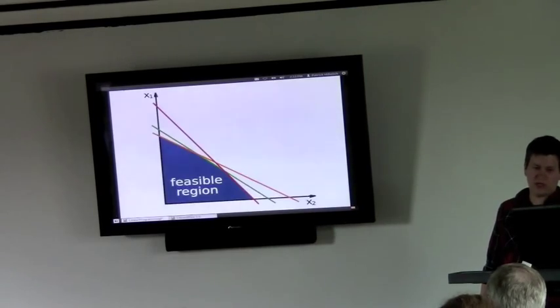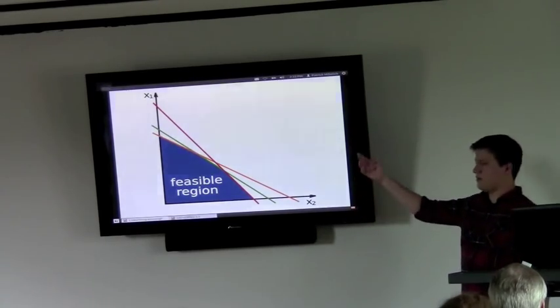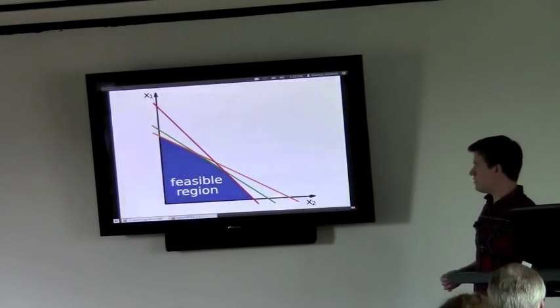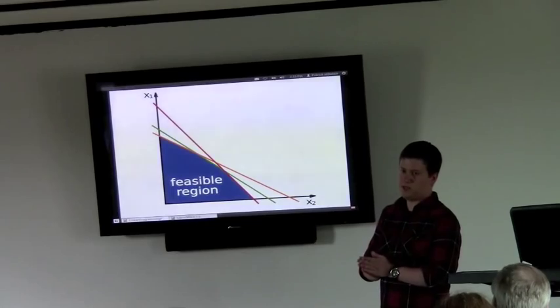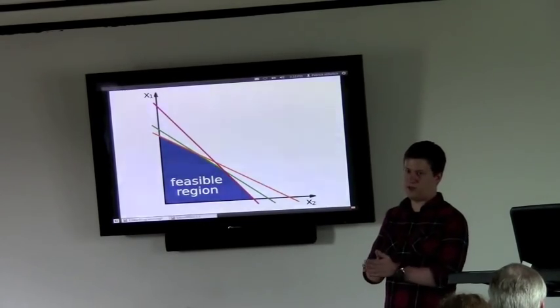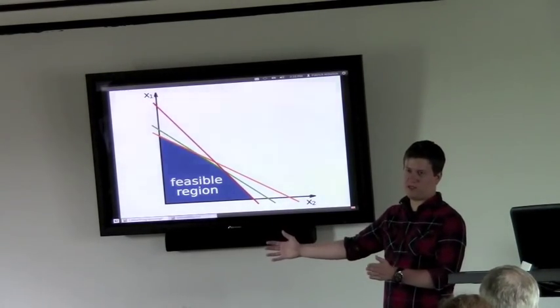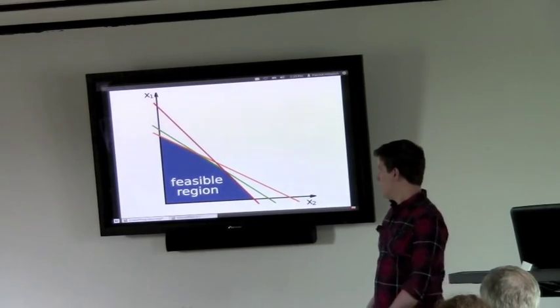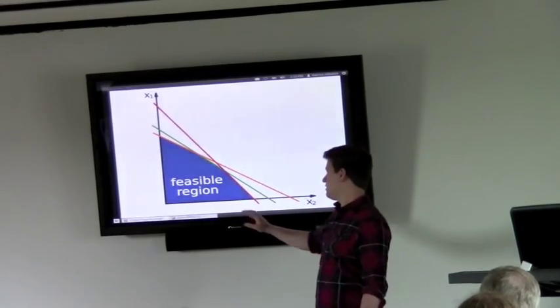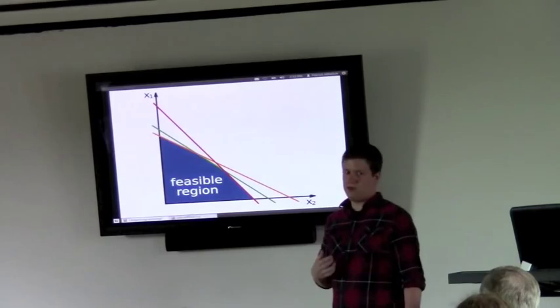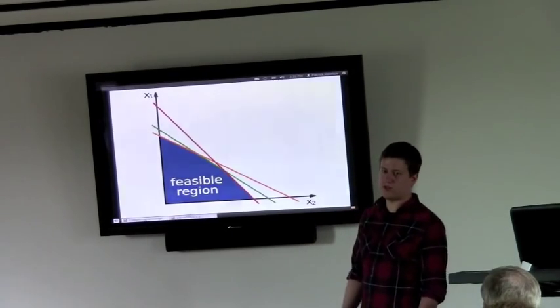And what this looks like is something like this. Here's a simple example where we have two variables, x1 and x2. And each constraint shown by these lines basically is a plane dividing your space of solutions in two. And it disqualifies half of that space on one side of the plane. So when you put a bunch of these together, where they intersect is the feasible region. So any solution to your problem has to fall in the feasible region, because that's where all the constraints are satisfied.